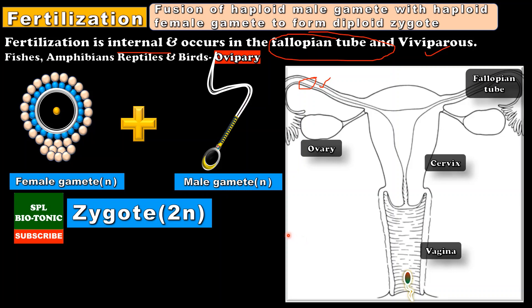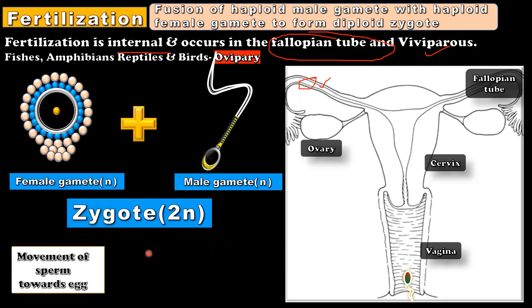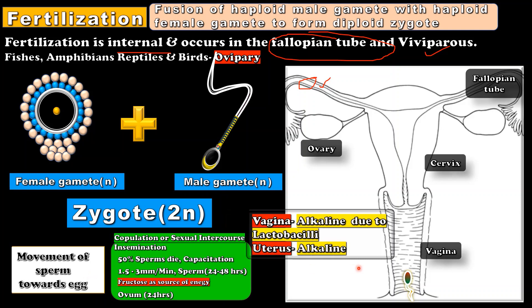There are various steps involved in the process of fertilization. The first step is the movement of sperm towards the ovum. At the end of sexual intercourse or copulation, the male ejaculates semen into the vagina. This semen contains 200 to 400 million sperms. This insertion of sperms into the female tract is called insemination.